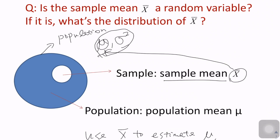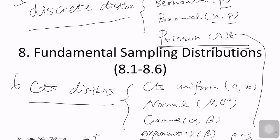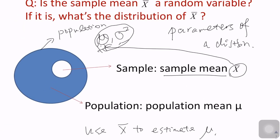Population parameters like mu and sigma squared are called parameters of a distribution. These parameters are all constants, but for most of the time we won't know their specific values — they are unknown constants. So we draw a sample, calculate the sample mean or other sample statistics, and use those to estimate the population parameters.